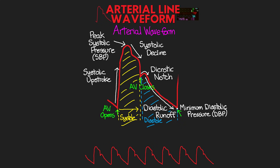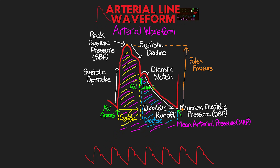Knowing all of these parts, we can actually get a little more information from the waveform. The difference between the peak systolic pressure and the minimum diastolic pressure is what we refer to as our pulse pressure. And if we take the sum of all of the area under this waveform, this gives us an indication of our patient's mean arterial pressure, or their MAP.